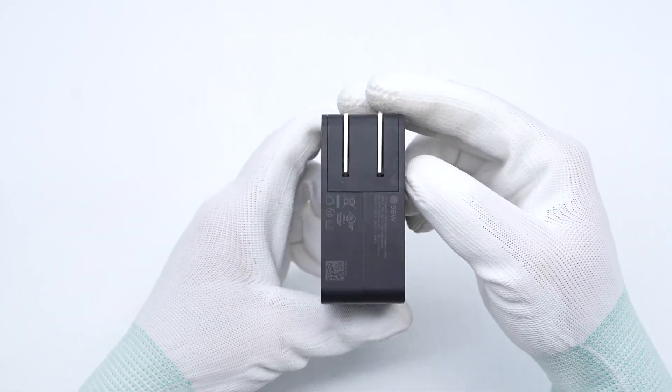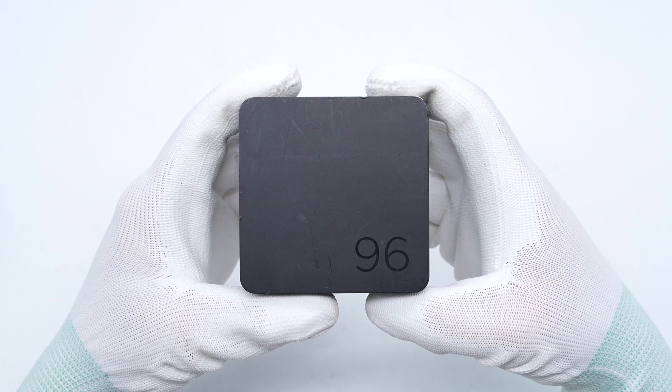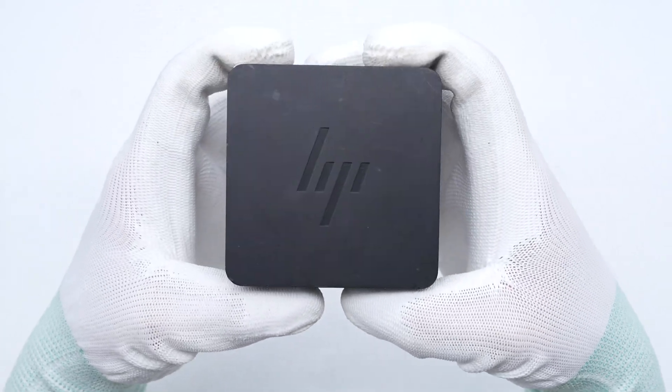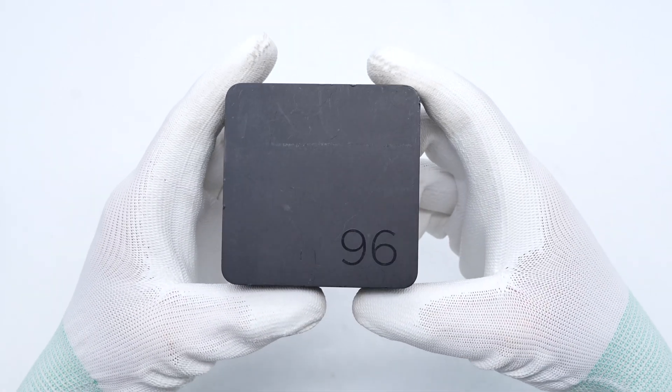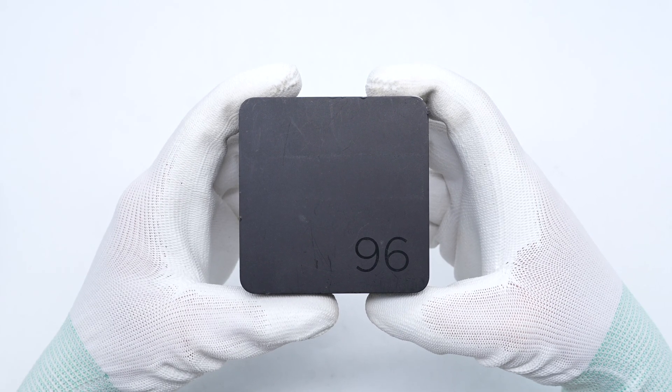It adopts a black shell made of fire-retardant PC, and the surface is frosted to resist fingerprints. There is an HP logo in the center of the front. The word 96 is written on the lower right corner of the back, indicating the maximum output power of the charger.